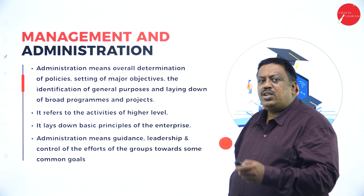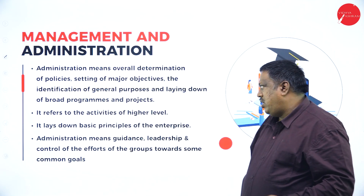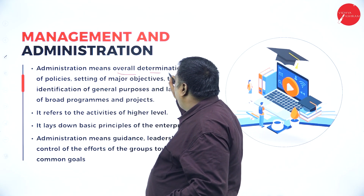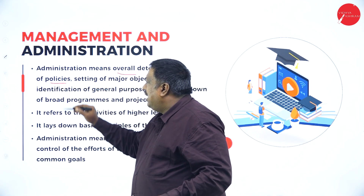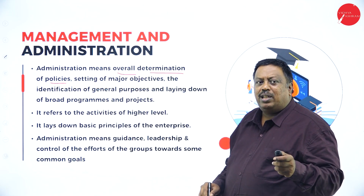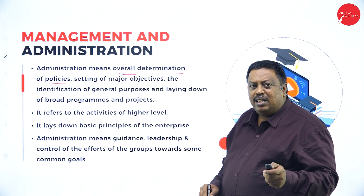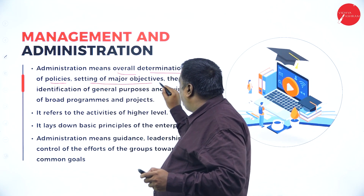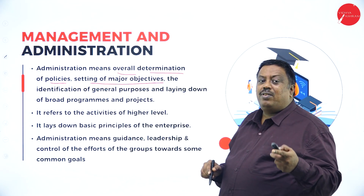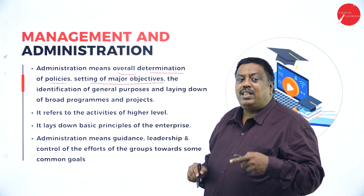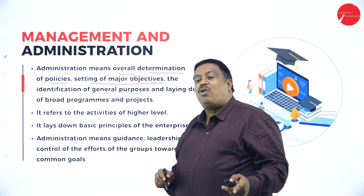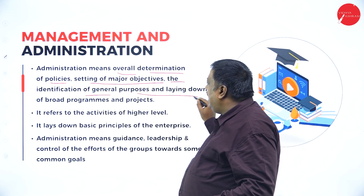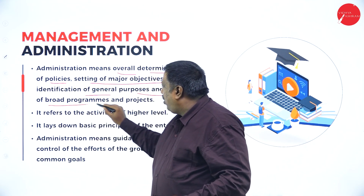The next concept is management and administration. Administration is nothing but the overall determination of policies. The top level makes all the policies about what should be done by the middle level and operational level, setting major objectives of the organization — the goal, how it has to be reached with quality services and quality products — and the identification of general purposes and laying down of broad programs and projects.